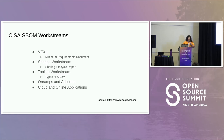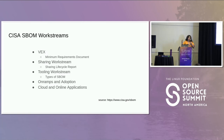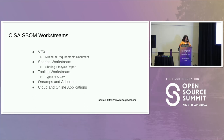These are the work streams CISA created. VEX is the vulnerability exchange work, talking about how to communicate in a machine-readable way whether a vulnerability is exploitable or not, or what the status of the investigation is. There's the sharing work stream, which published the sharing lifecycle report in April. There's a tooling work stream involving Kate Stewart and SPDX, talking about types of SBOMs based on the software development lifecycle. And then there's the on-ramps and adoption work stream, and the cloud and online application work stream — which is what this talk is about.